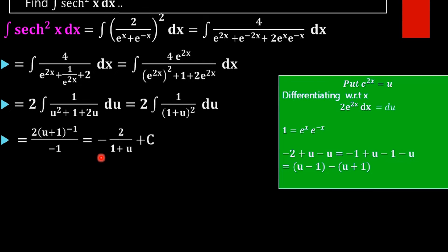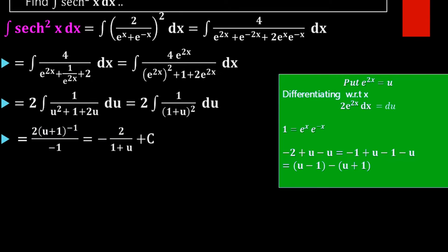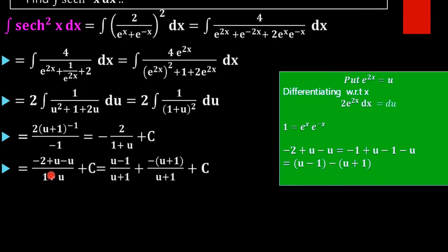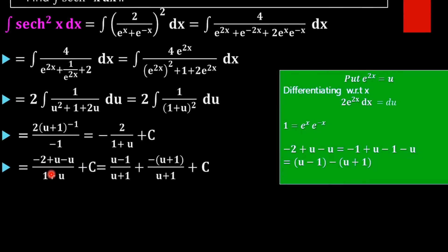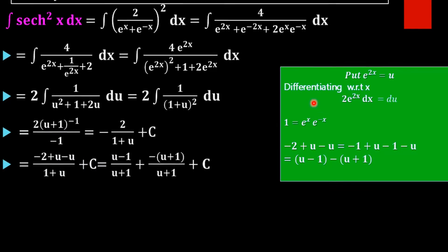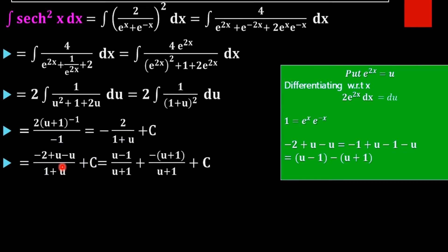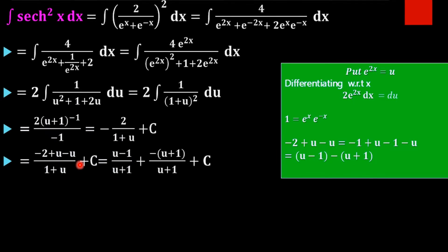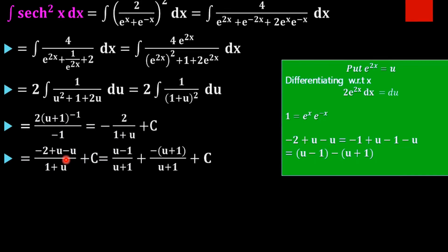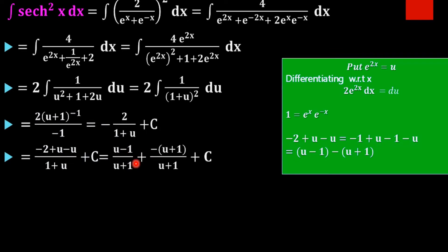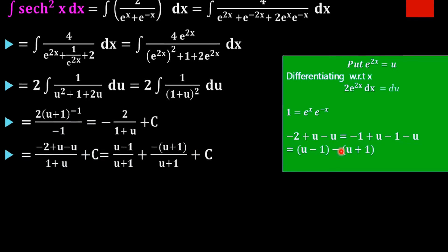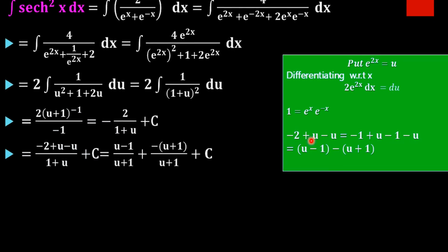To express the result in hyperbolic form, we add and subtract u in the denominator. Rewriting -2 as (-1 + u) + (-1 - u), we split the fraction: (u - 1)/(u + 1) and -(u + 1)/(u + 1). The term -(u+1)/(u+1) simplifies to -1, which is a constant that merges with c.